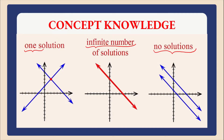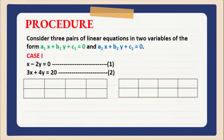Now let us start with the procedure. A pair of linear equations is consistent when it has a solution, be it unique or infinitely many. And if it is not having any solution, in that case your system will be inconsistent.